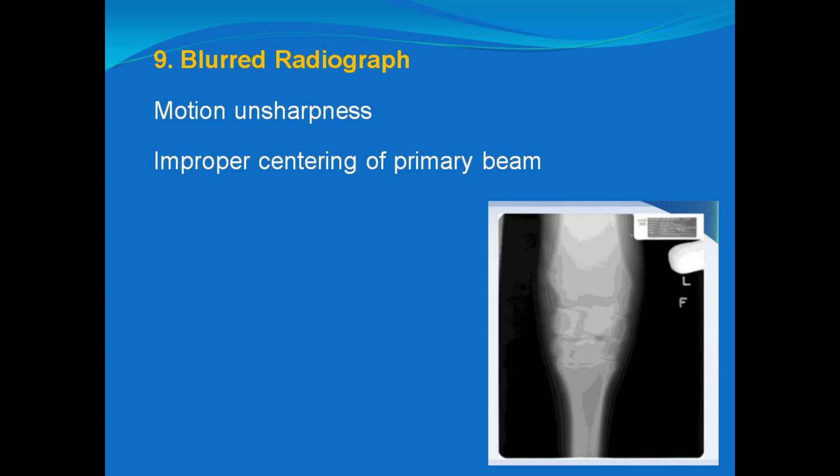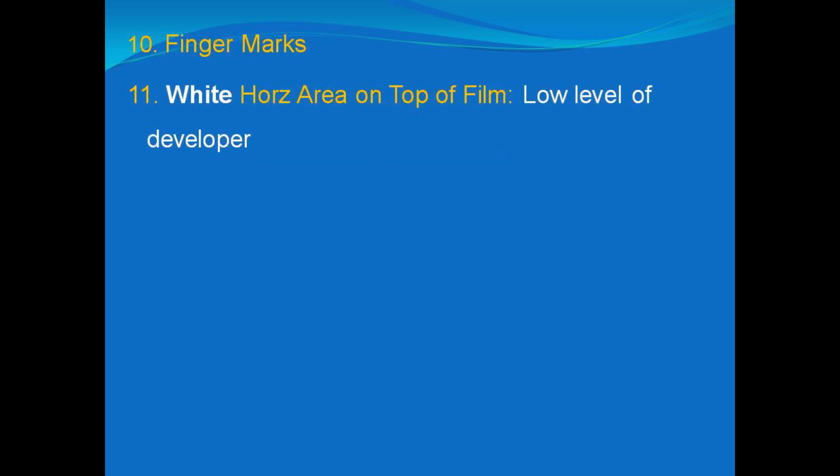The next problem is a blurred radiograph, which is particularly the result of motion unsharpness — when we are getting the radiograph, the tube head, the patient, or the table may move. It can also be due to improper centering of the primary beam, meaning the beam may not be centered at a 90-degree angle from the object being radiographed.